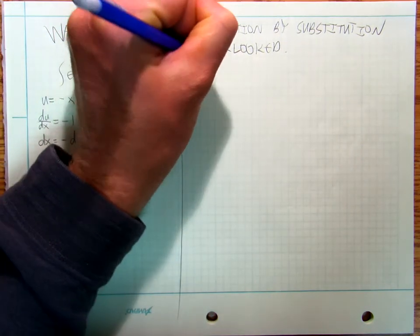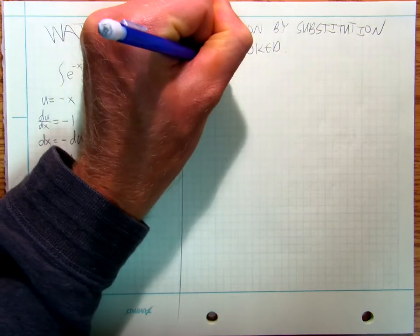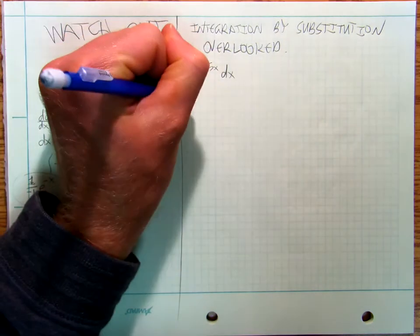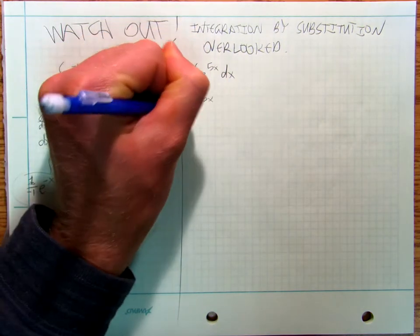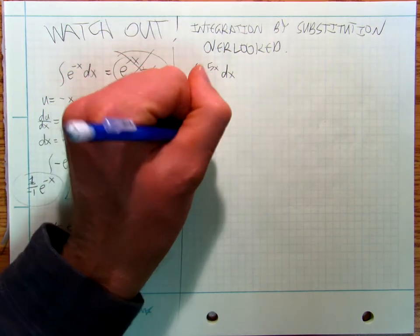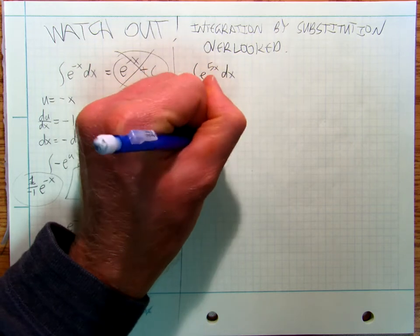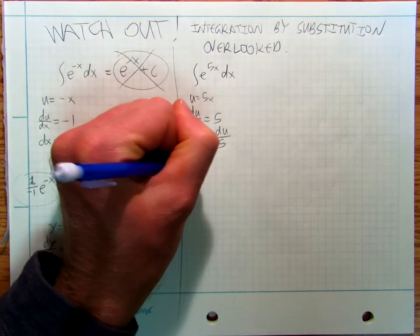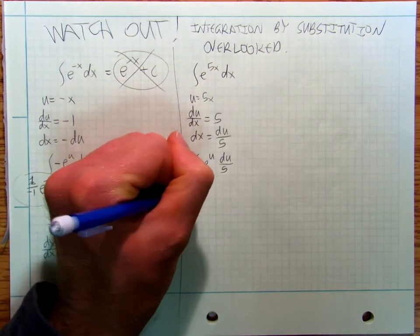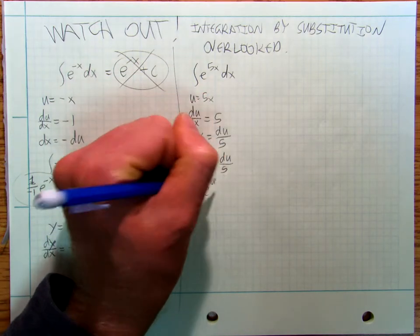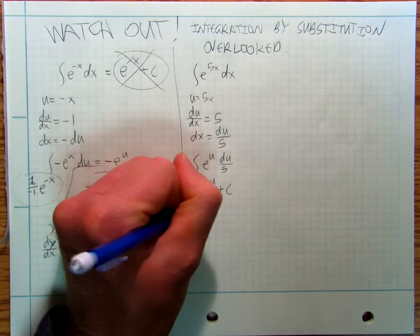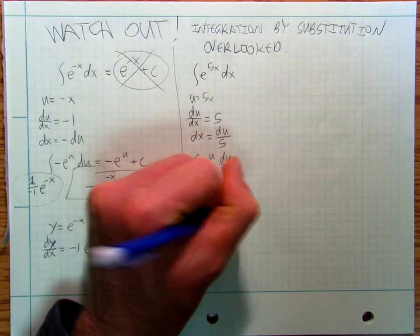Okay, so similarly, if I can go through this whole procedure: u equals 5x, du dx is equal to 5, dx equals du over 5, integral of e to the u, du over 5, 1 fifth e to the u plus c, or 1 fifth e to the 5x plus c.